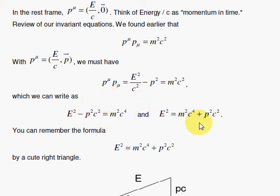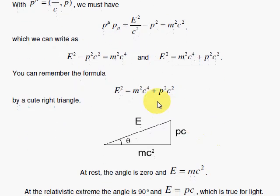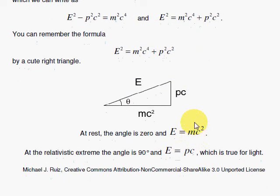And then by bringing the p squared, c squared to the other side, we have a cute right triangle that gives us a neat representation and visualization of this formula. E is the hypotenuse. m, c squared, your rest energy is here, and p, c is on the vertical. So using the Pythagorean theorem,